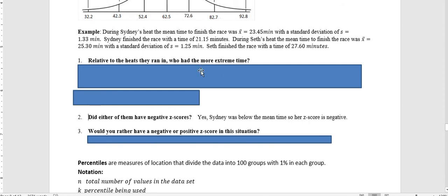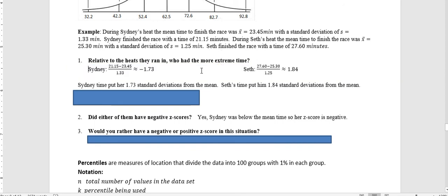For Sydney, we're going to take her time of 21.15 and subtract the average, which is 23.45, then divide by the standard deviation. That's going to give us a negative 1.73. So that's her z-score. But as a standard deviation, we would just say 1.73 because standard deviations, we don't include the negative.